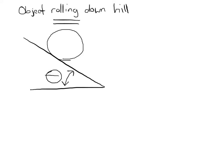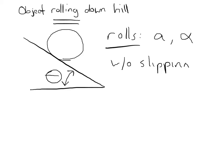However, if an object rolls, then it experiences both linear and angular acceleration. That is the key point: if it rolls, we have both linear acceleration a and angular acceleration alpha. And if it rolls without slipping, then a and alpha are related — a is equal to alpha times the radius of the object.